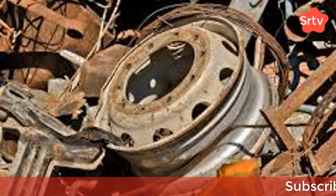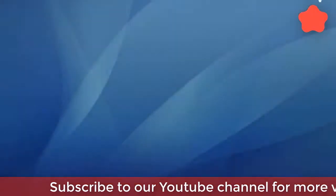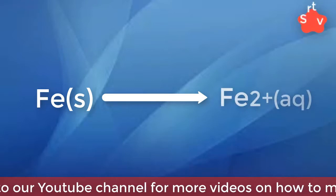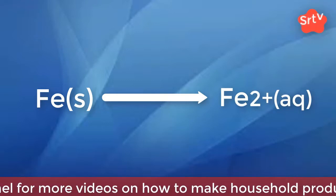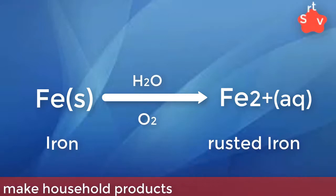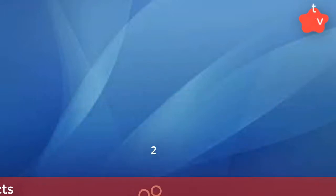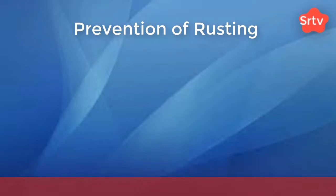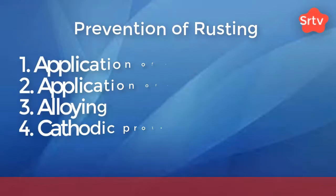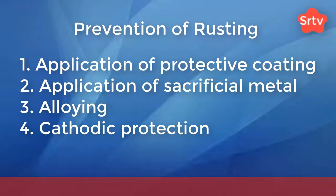This iron oxide is permeable to both air and water and cannot protect the iron from further corrosion. The following shows the reacting equation. Rusting can be prevented by four methods: 1. Application of protective coating. 2. Application of sacrificial metal. 3. Alloying.